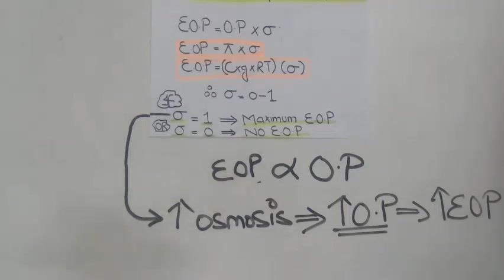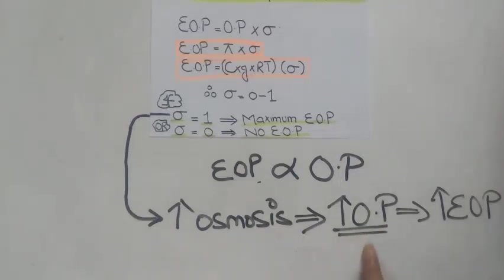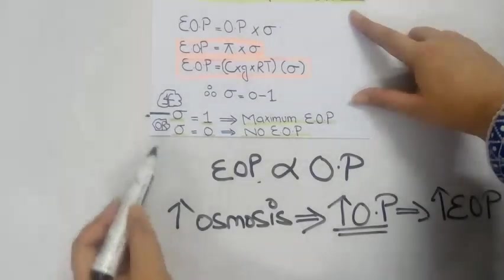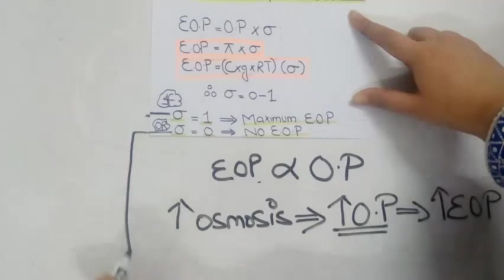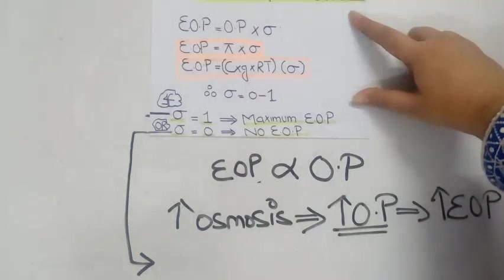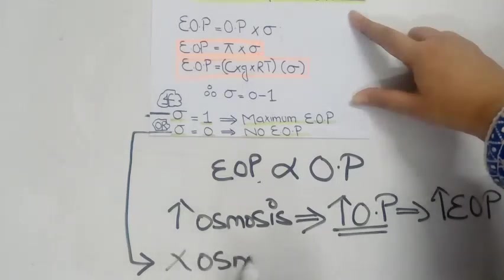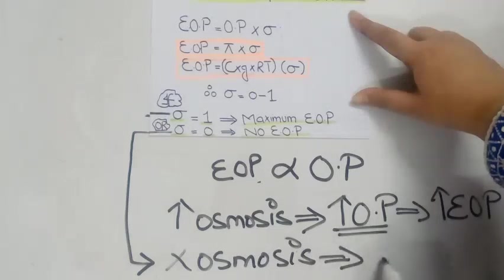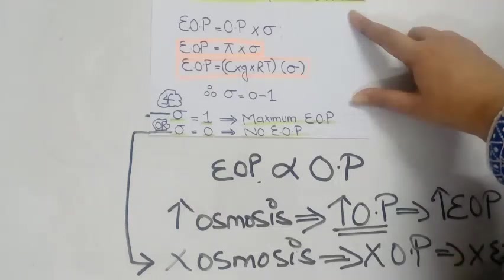If the reflection coefficient is one, it means the solute is completely impermeable, so higher osmosis will occur, resulting in higher osmotic pressure and therefore high effective osmotic pressure. A reflection coefficient of zero means the solute particles are completely permeable — they will pass through the semi-permeable membrane — resulting in no osmosis, no osmotic pressure, and therefore no effective osmotic pressure.